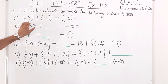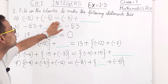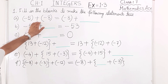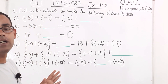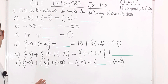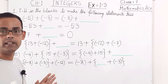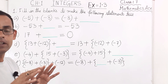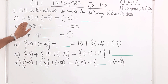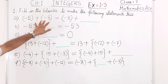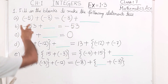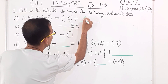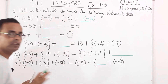First one: (-5) + (-8) = (-8) + ___. What property is this? This is the commutative property of addition — that means when you add two integers, if the order is changed, the sum will be the same. So here order is changed: minus 8 is written first, then we write minus 5.